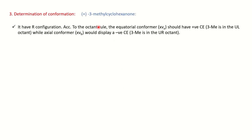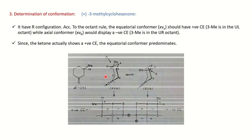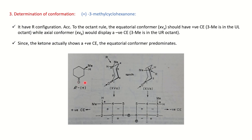Now we will see the conformation example using 3-methylcyclohexanone. Here we consider the R configuration and apply the Octant Rule. If you are not familiar with the Octant Rule, I will share the link in the description box. In the non-planar conformation, the methyl group at the 3-position can be either at the equatorial position or the axial position. You need to identify which conformation your molecule exists in. The equatorial conformation gives a positive Cotton Effect.